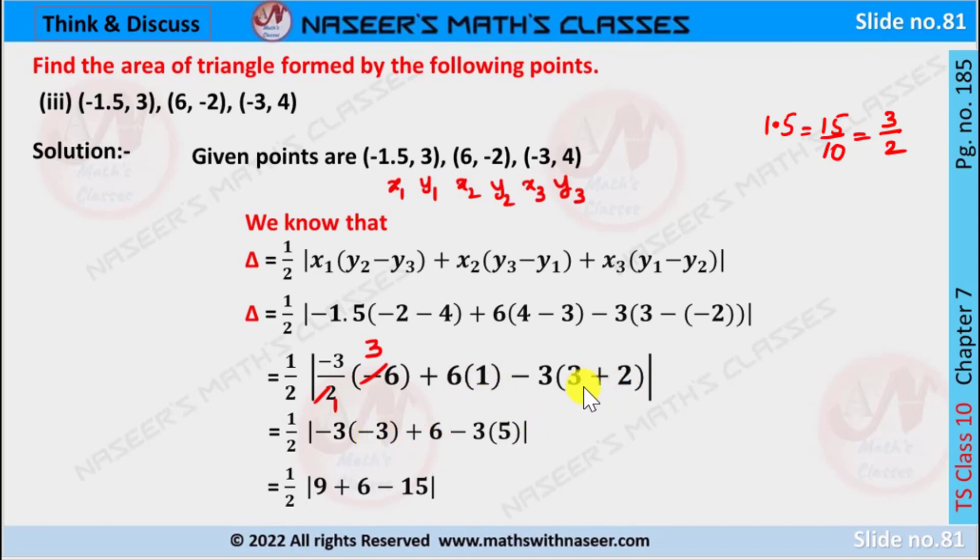3 plus 2 is 5, then we can write it as 3 into 5. Here minus into minus is plus 3, 3 times 3 is 9, here plus 6. Here 3 into 5 is written as minus 15, 9 plus 6 is 15.